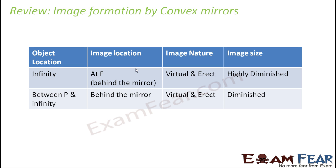If we quickly review image formation by convex mirrors: whenever the object is located — whether at infinity, at center of curvature, at focus, or between focus and pole — it doesn't matter. Every time the image is virtual, erect, and diminished. If the object is going far away the image becomes all the more diminished, so if the object is at infinity the image is highly diminished. If the object is quite near, the image is still diminished but comparatively less so.